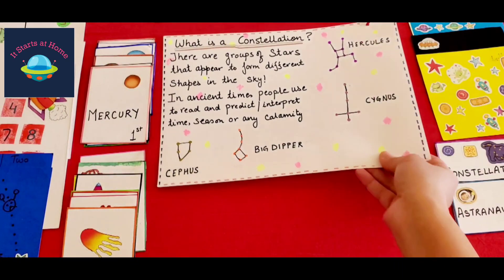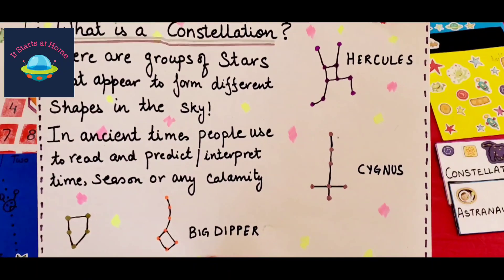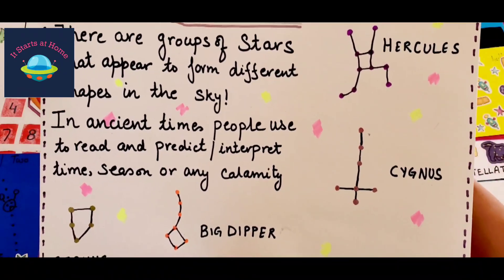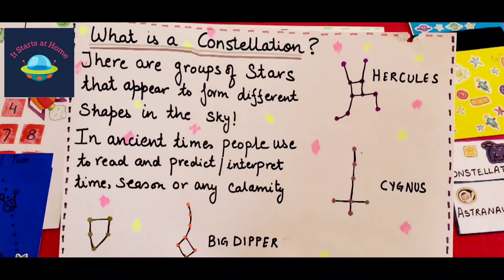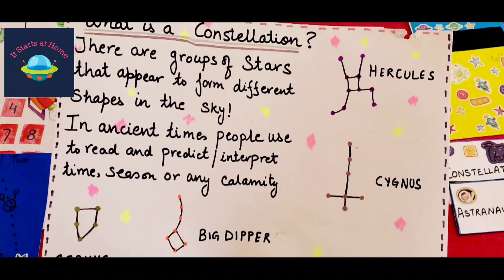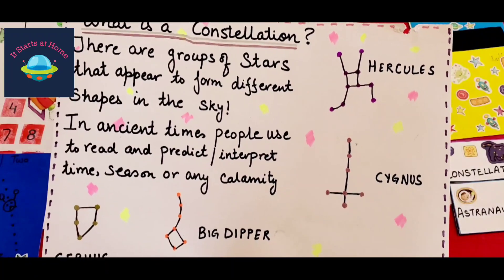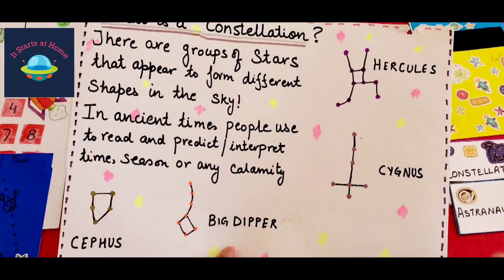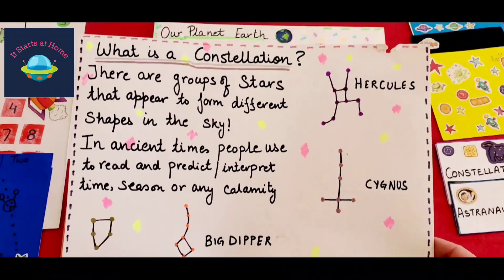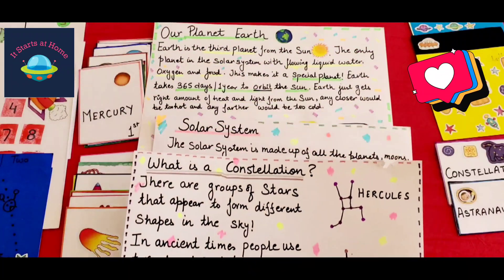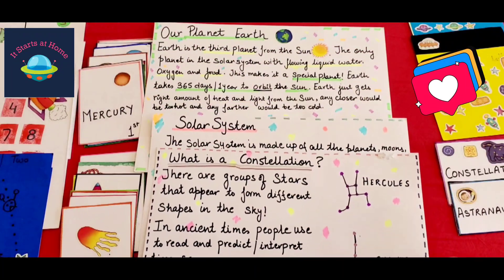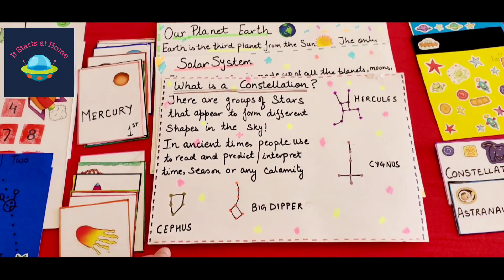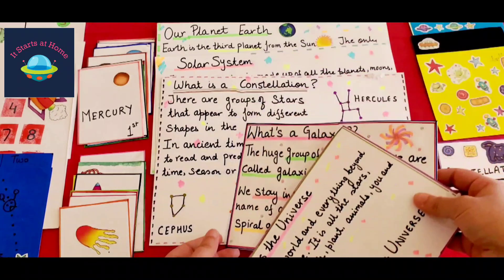Then it covers constellation, because Vivan was very keen on learning about the stars. I just wanted to give a touch of what constellation is and different kinds of constellations. This was part of just the anchor charts to go back and forth in terms of understanding.